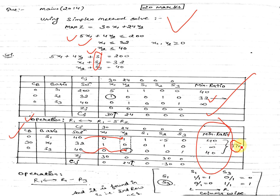There is a tie. When there is a tie between these two values, then how to proceed? These two values belong to which variable? These two values belong to S1 and S3.